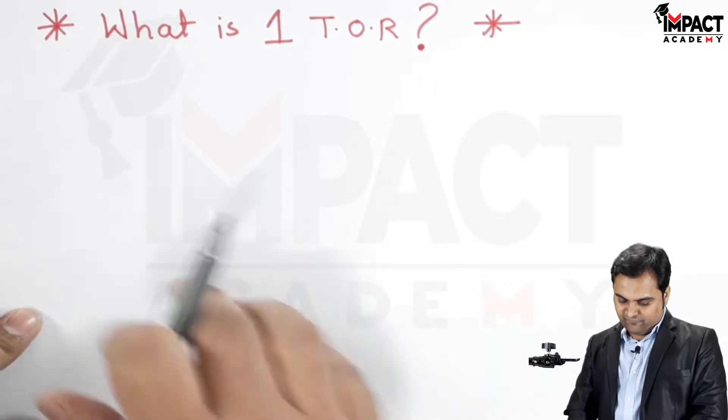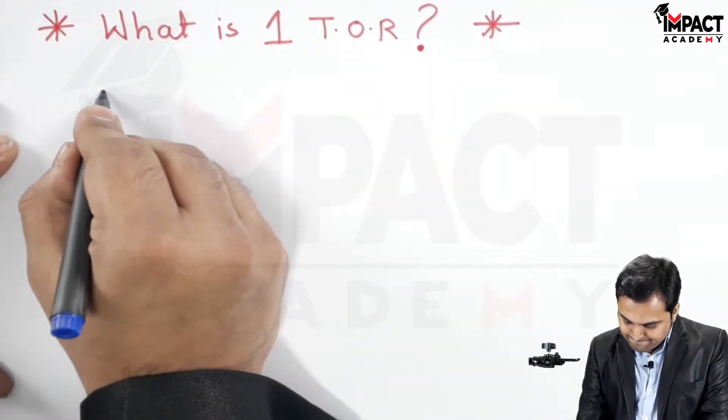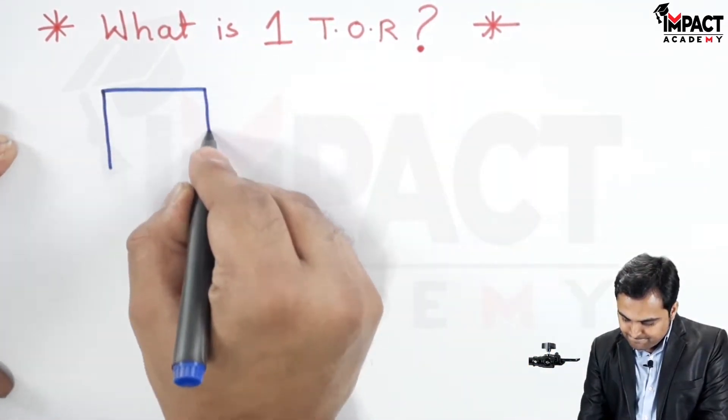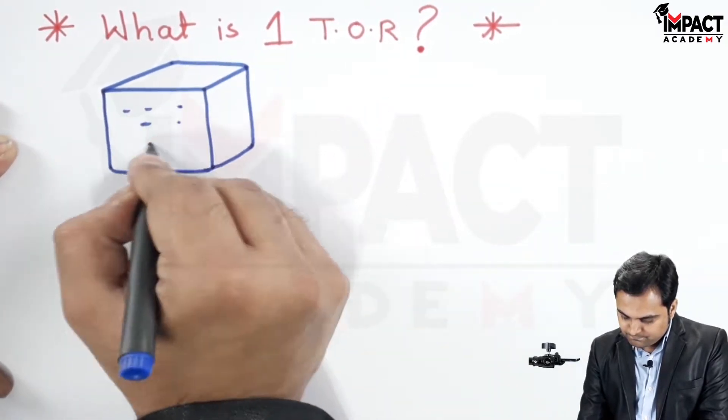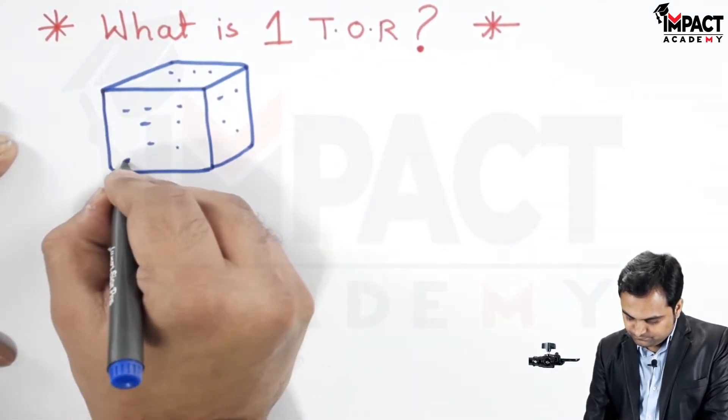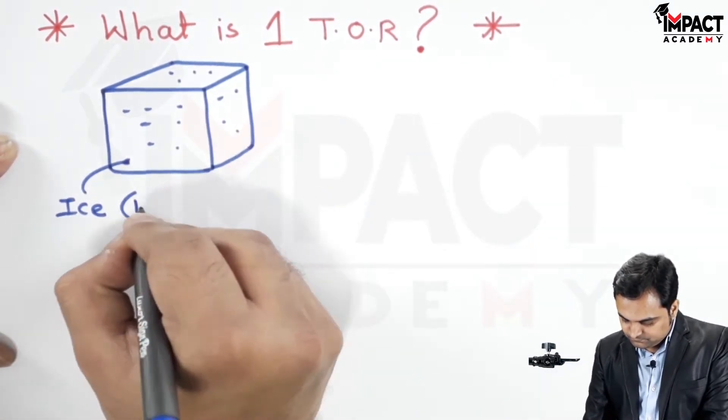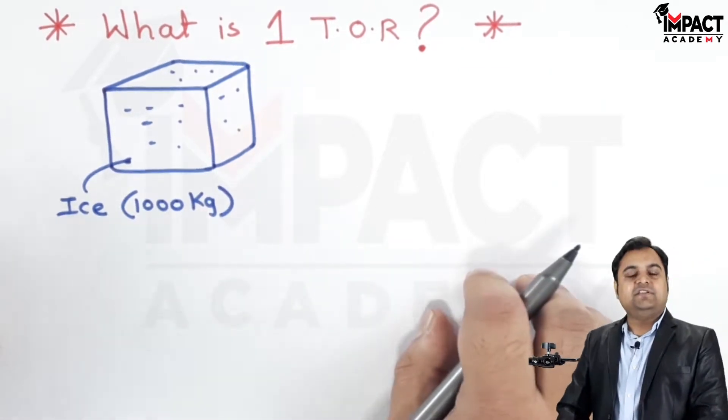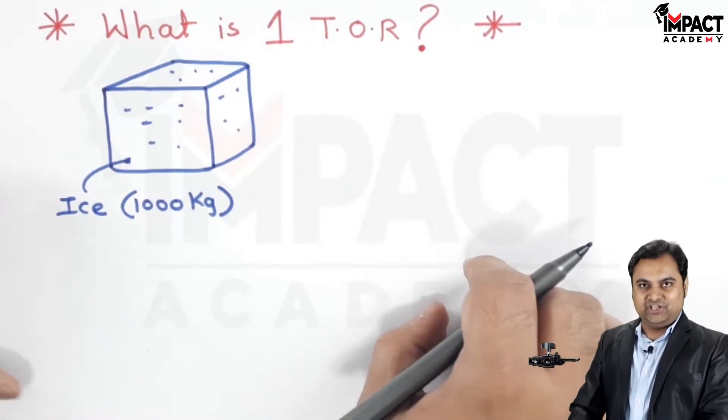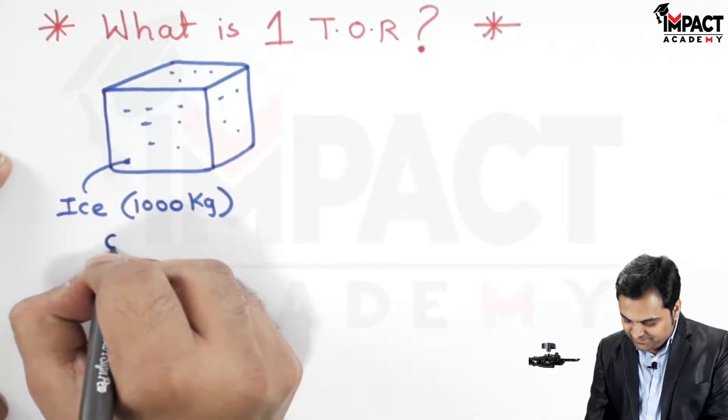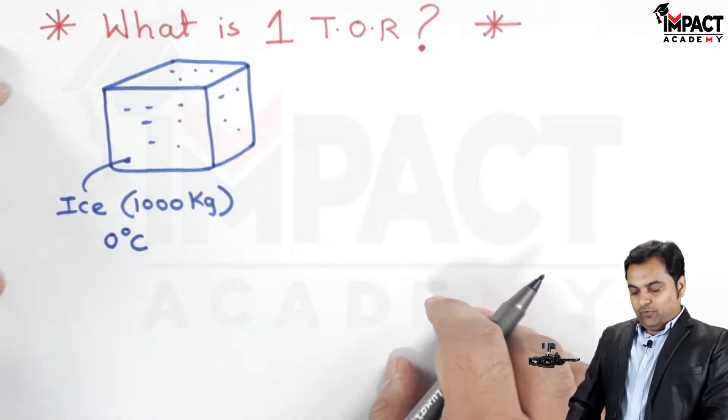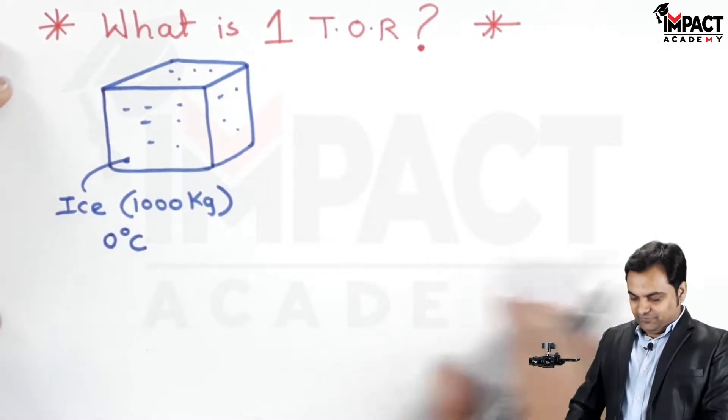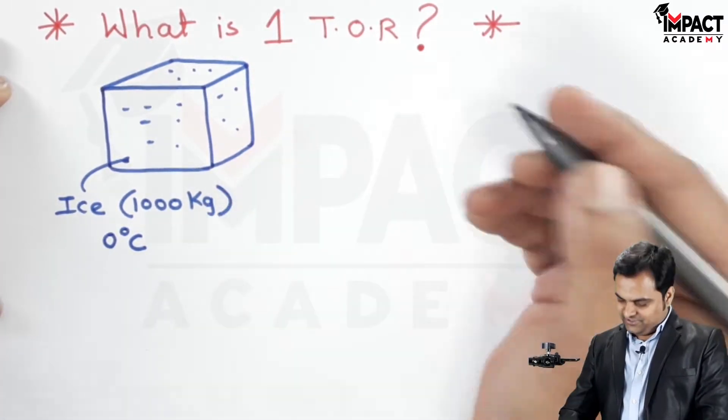Here there is an ice cube of 1000 kg at a temperature of 0 degrees Celsius. For explaining one ton of refrigeration effect, we can imagine that we are standing near this ice cube for 24 hours.